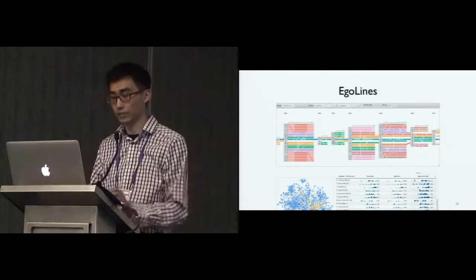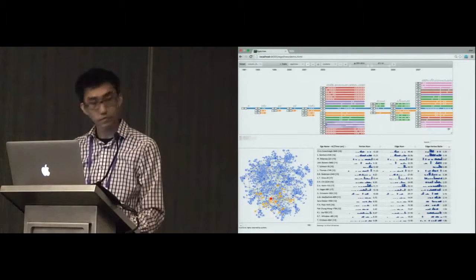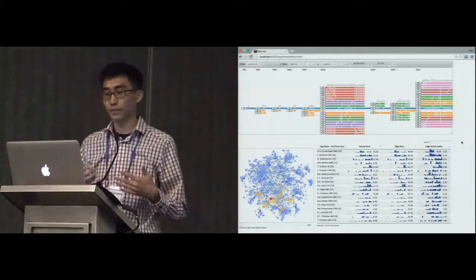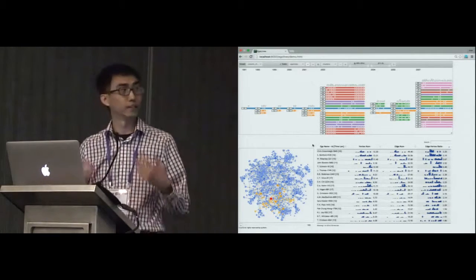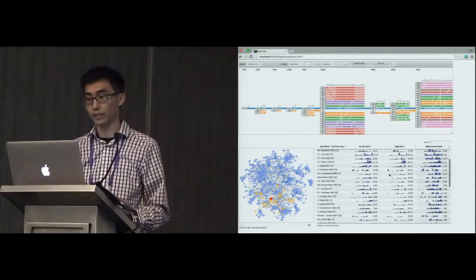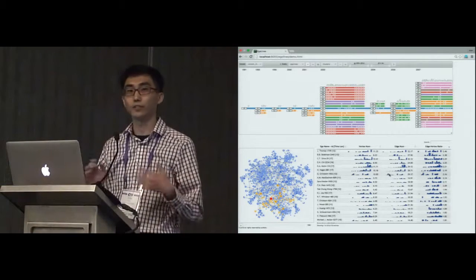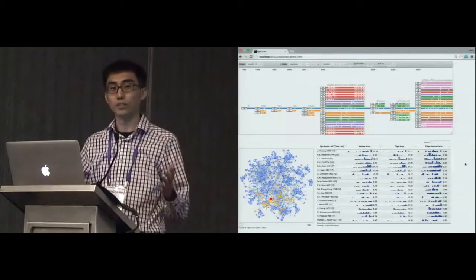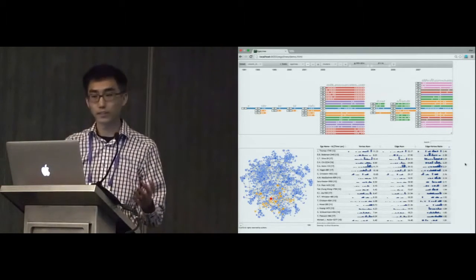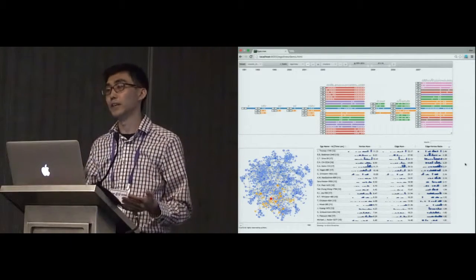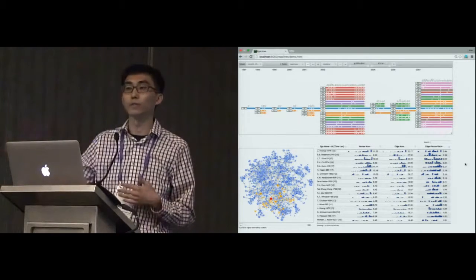Now I'm going to show you a demo of our system. This is the full interface of the EgoLines system. Here you see an overview of the entire network aggregated across time, a table view showing each extracted ego network, and histograms indicating variables changing across time — for example, node number and link number. The dataset I'm using here is co-authorship networks based on publications at CHI and InfoVis conferences during the past 25 years.